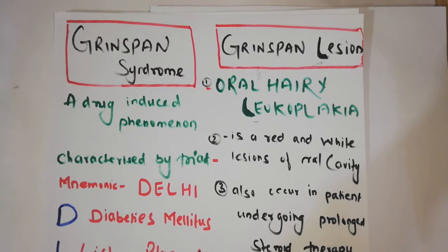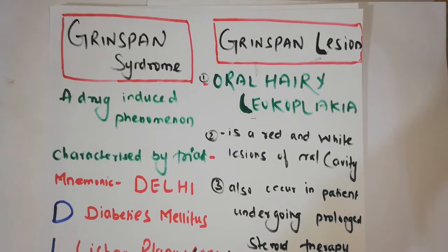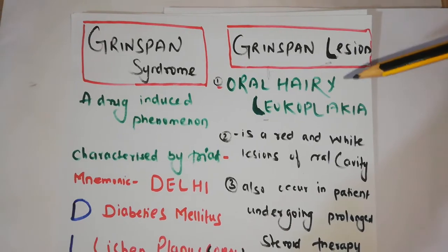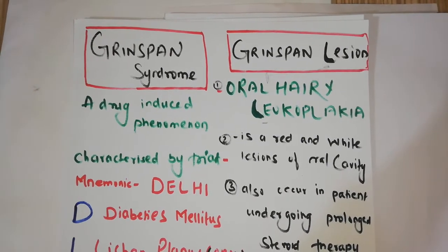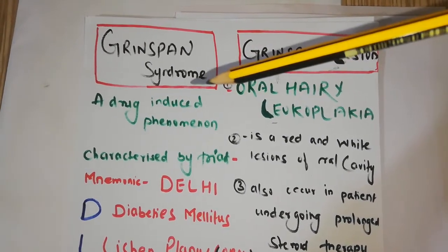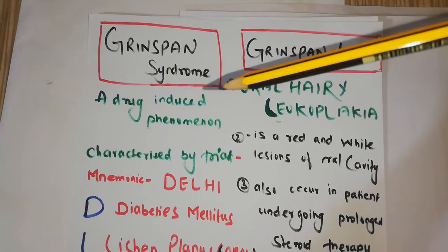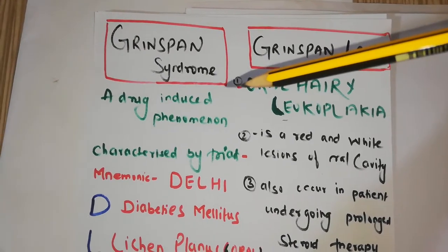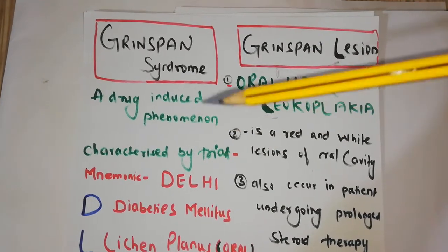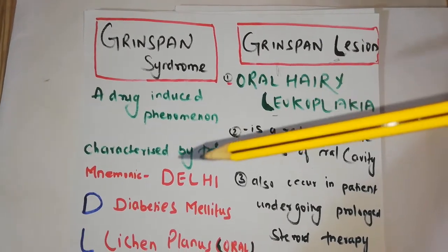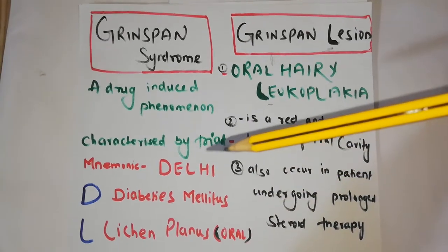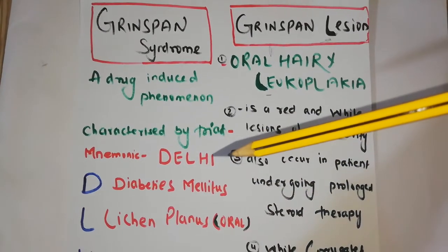Grinspan syndrome and Grinspan lesion are both different. Grinspan syndrome is actually a formation of many diseases combined to form a syndrome. It is a drug-induced phenomena and characterized by a variety of features — we will see three main features.